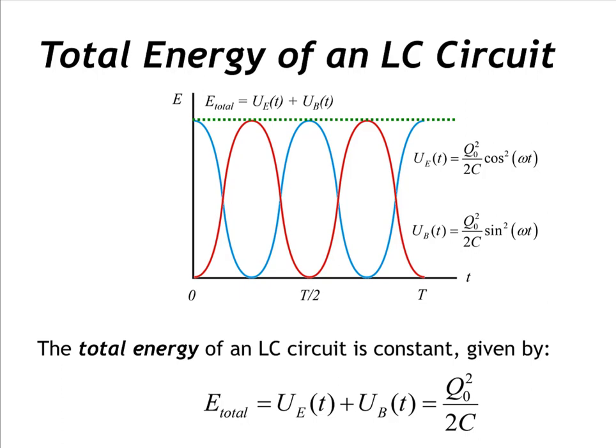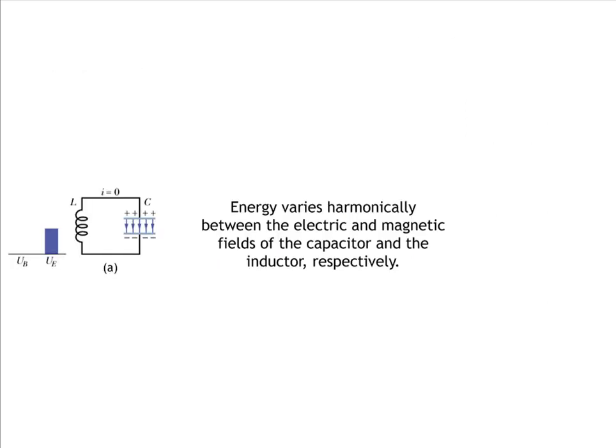Now let's look at the sequence of events — what's actually happening to the components in our circuit as the charge varies. Energy varies harmonically between the electric and magnetic fields of the capacitor and the inductor, respectively. Recall that the source of current in an LC circuit is the charge on the capacitor plates. Similar to how a spring-block system is a mechanical oscillator, an LC circuit is an electric oscillator, oscillating at a frequency of omega divided by 2π, where omega equals 1 divided by the square root of the product of the inductance and capacitance.